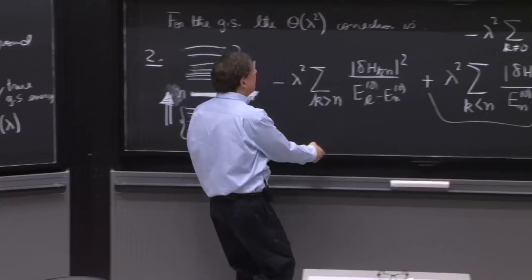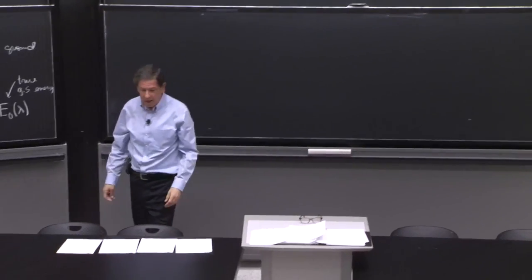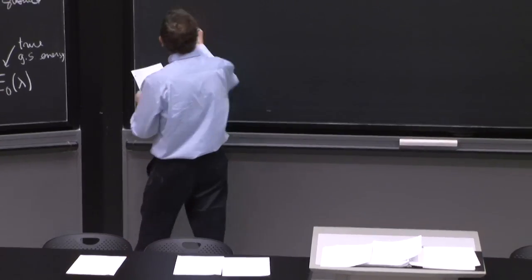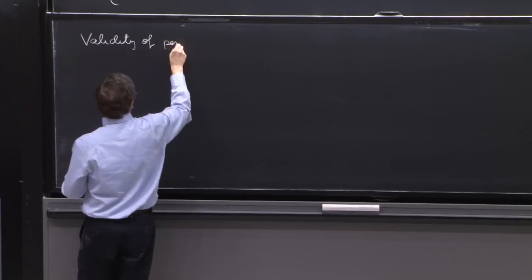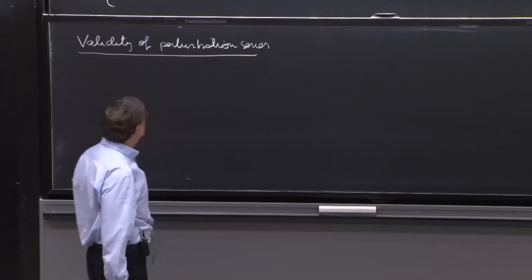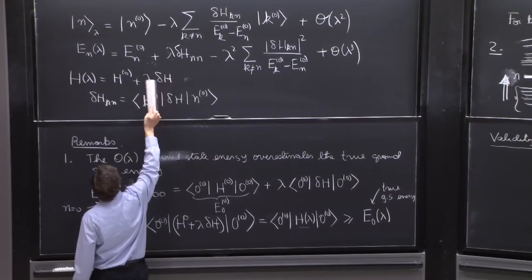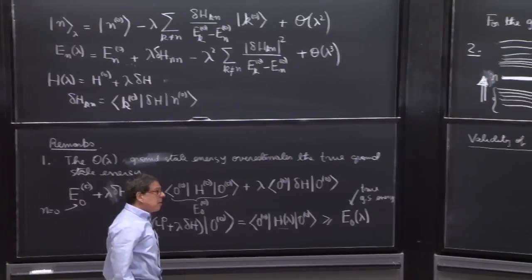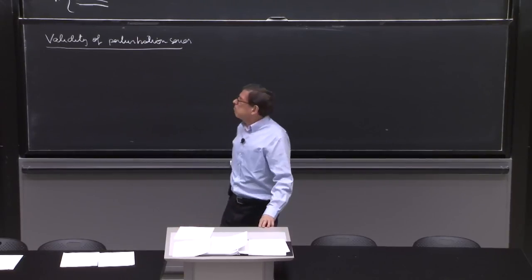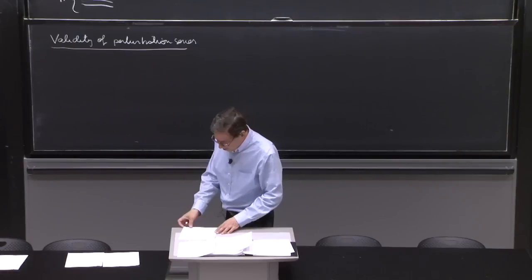Another point we want to make has to do with the validity of this expansion. In general, when you have series expansions, the issues of convergence are delicate. So we can get a lot of insight just by doing an example. One thing we've said is that delta h is supposed to be smaller than h0. Now, these are operators, so the statement that they're smaller has to be made more precise.